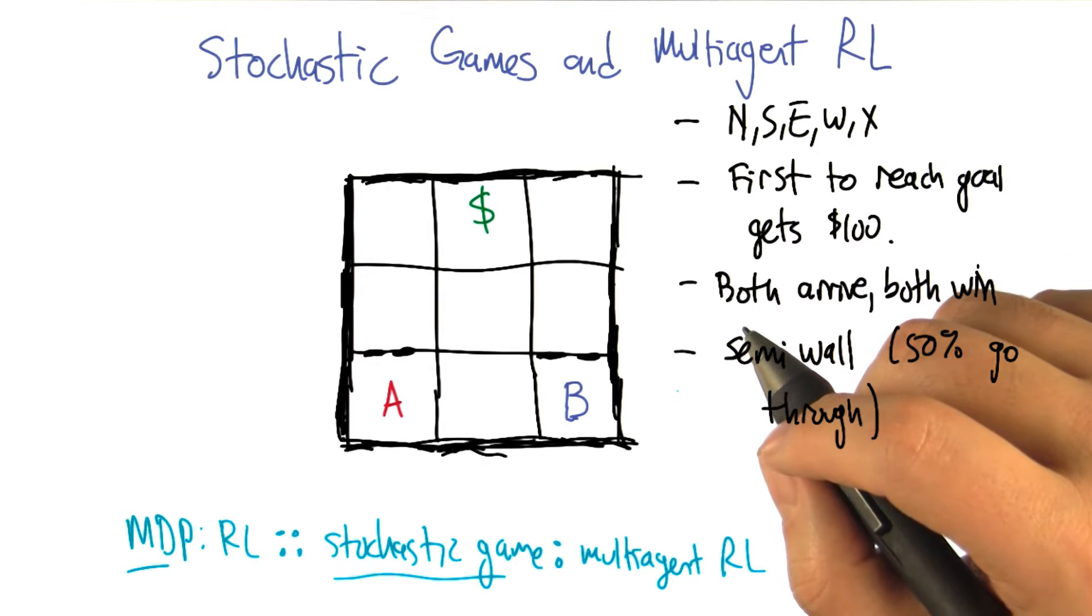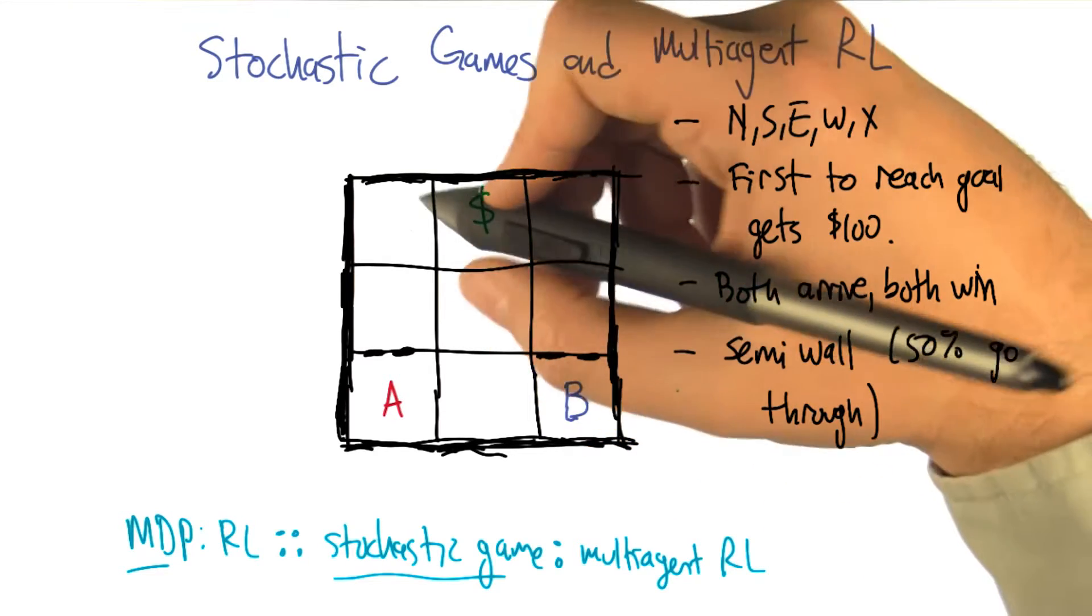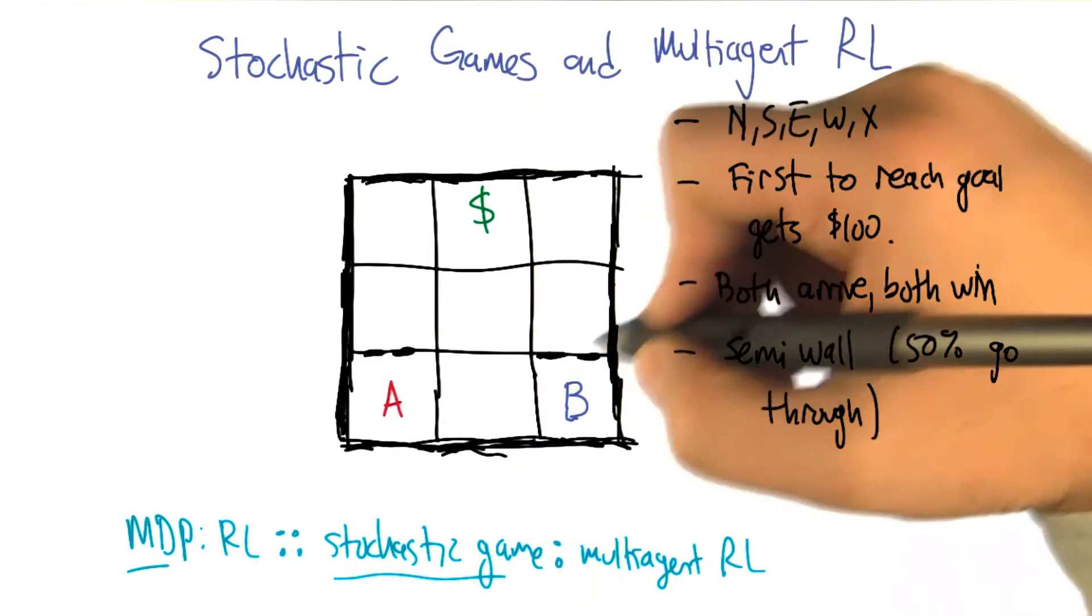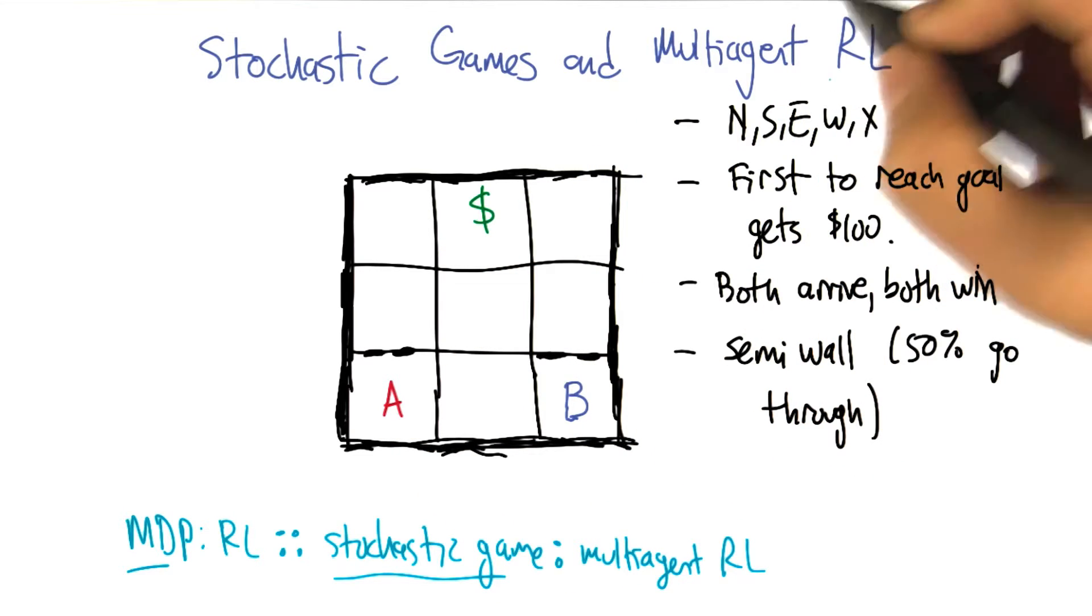And sometimes it's good to use the words that other people use. So, this is a three by three grid. Each of the players can go north, south, east, and west, and can stay put if that's helpful.